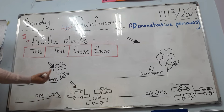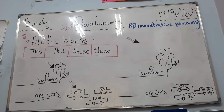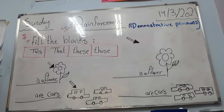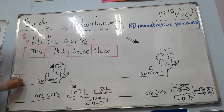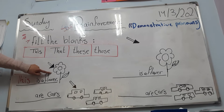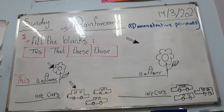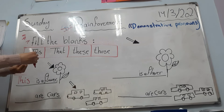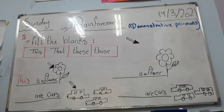Here we have one flower and it's close to you. So the word we use is 'this'. We use 'this' when it's singular — you have one thing — and it's close to you. So: 'This is a flower' — close to me and singular, one flower. Take 'this'. This is the first word, for singular and close.